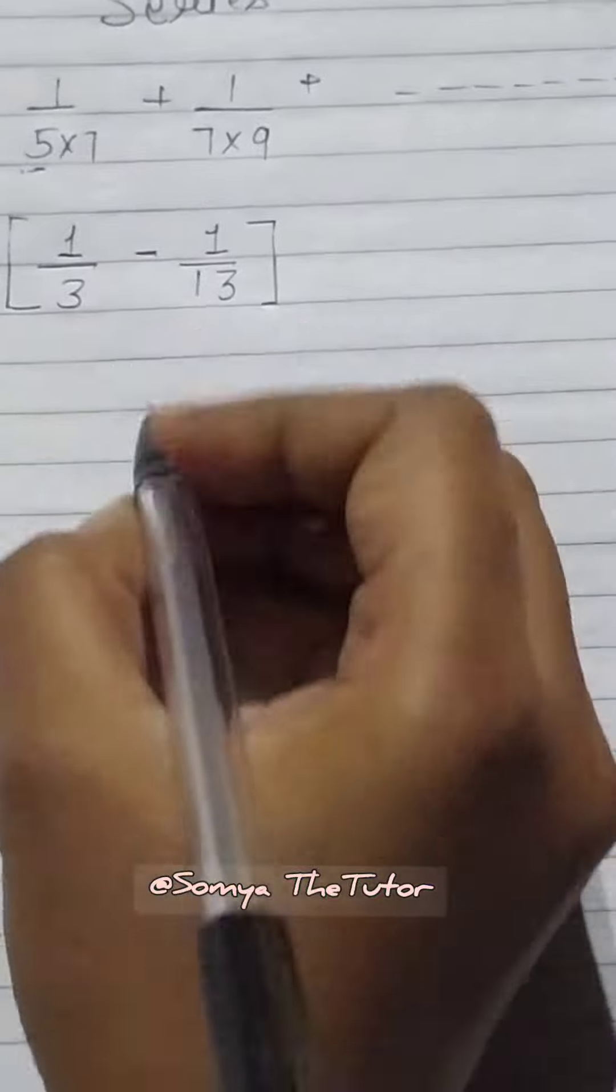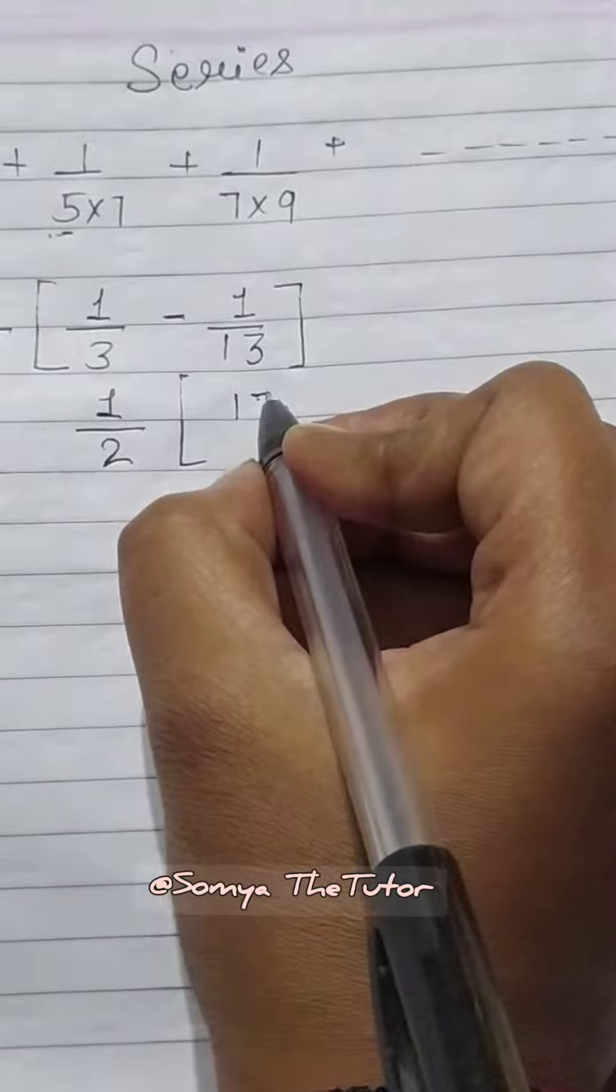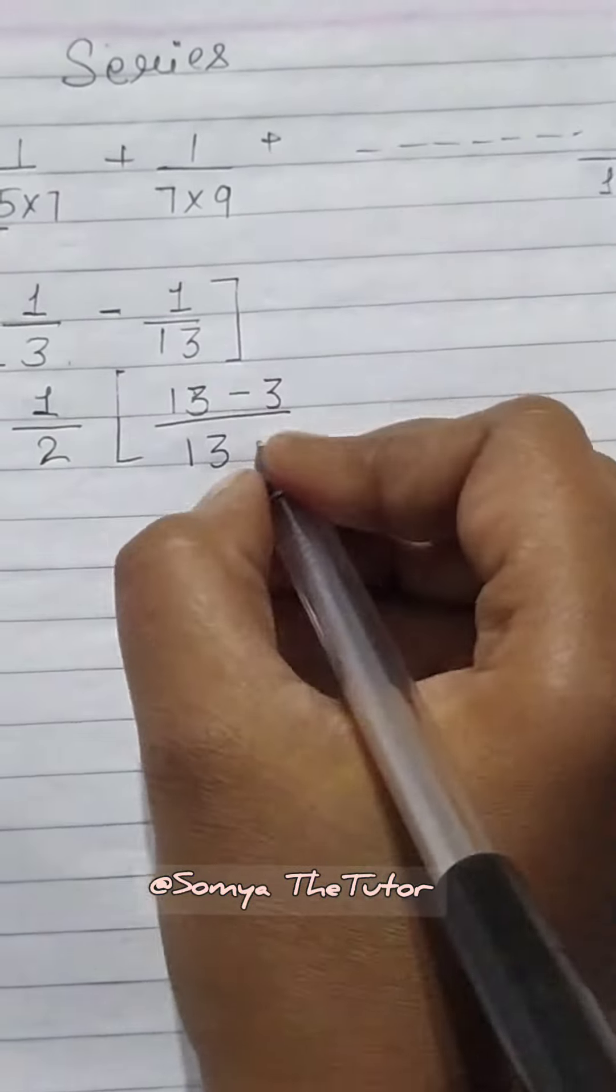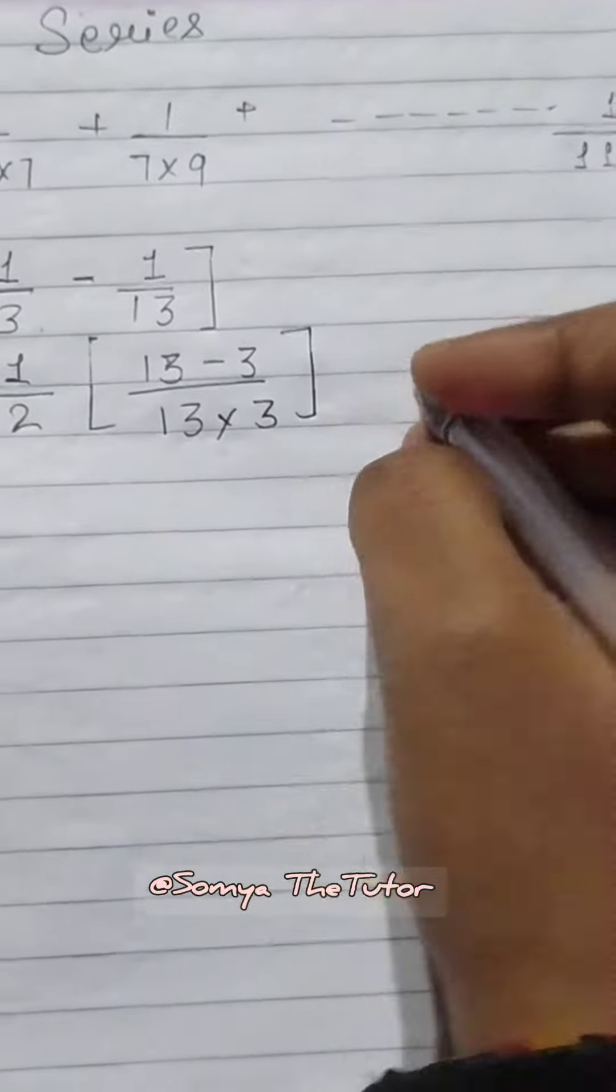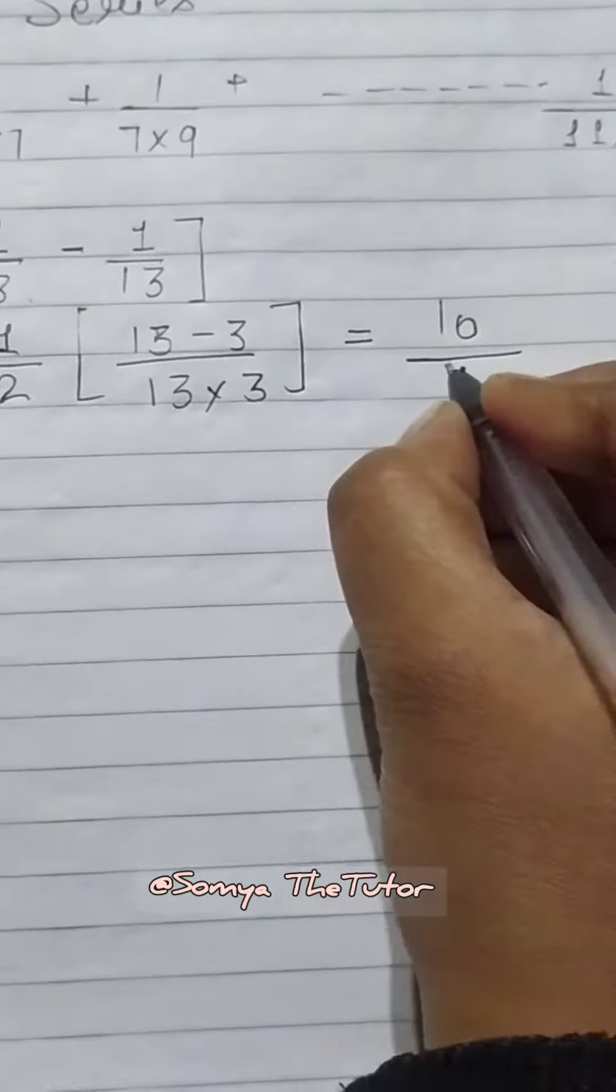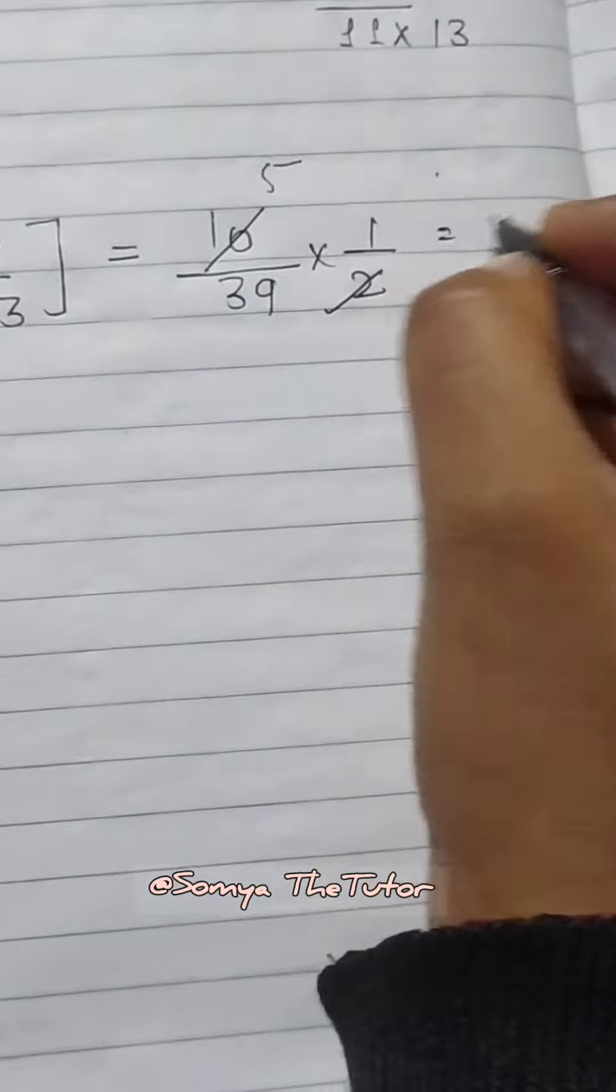Bracket rules. Then cross multiplication. Cross multiplication, 39 multiply 1 upon 2. This will cancel 5 times. The answer is 5 upon 39.